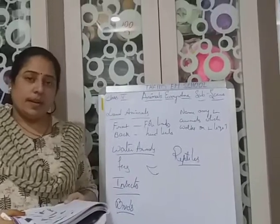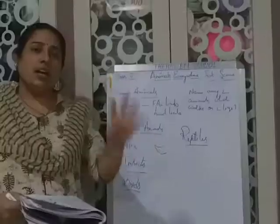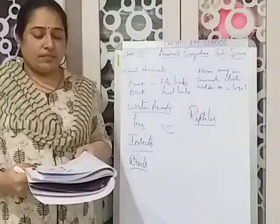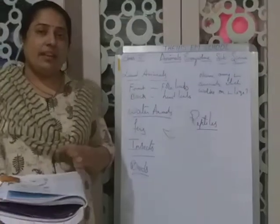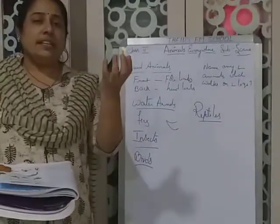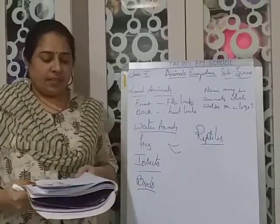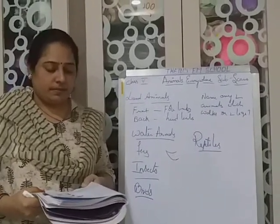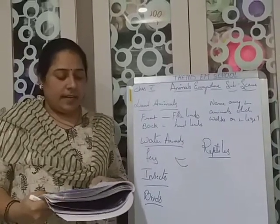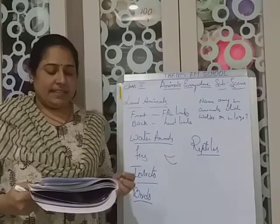Snakes are also reptiles. They do not have legs, but they also crawl. They have scales or plates on the underside of their bodies, and these plates are attached to their ribs. When snakes move, these plates act like feet and the ribs act like legs. Besides the plates, they have strong muscles.